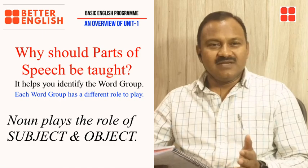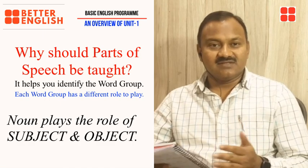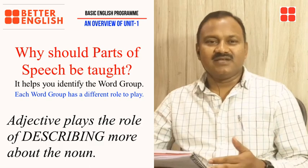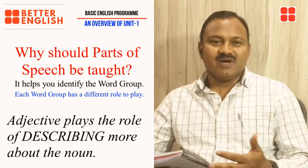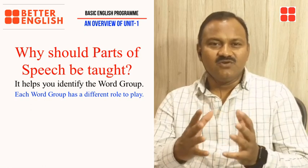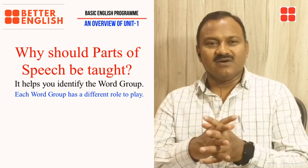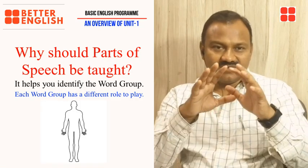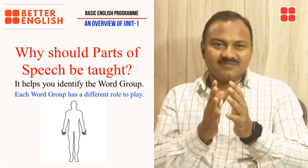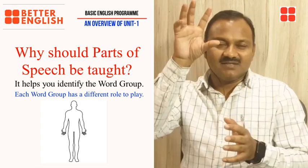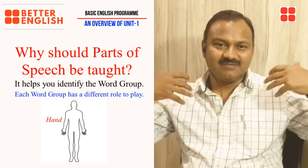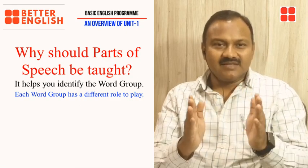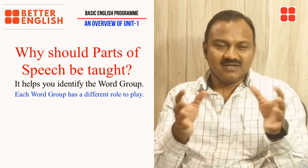Each word group, or part of speech, has a different role to play. For example, a noun plays the role of subject as well as object; a verb plays the role of expressing the action done by the subject; an adjective plays the role of describing the noun. If I ask you to draw a picture of a human being, you need to understand the very anatomy of that human being first — you need to understand the structure before you can draw it correctly.